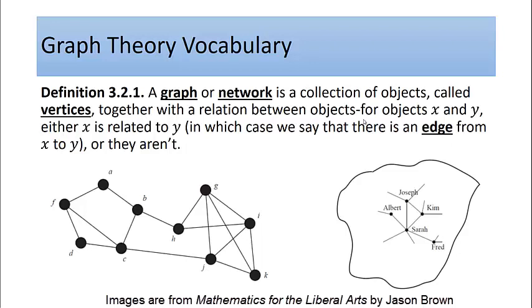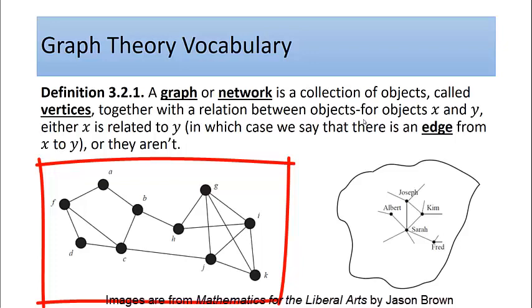A graph or network is a collection of objects called vertices together with the relation between the objects. For objects x and y, either x is related to y in which case we say there's an edge from x to y, or there isn't. Looking at the graph on the left, our vertices are these circles or dots. There's vertex A, vertex B, vertex C, and so on. In total this particular graph has 10 vertices.